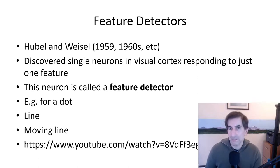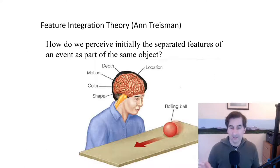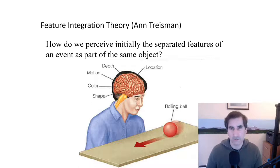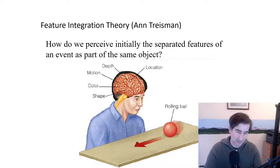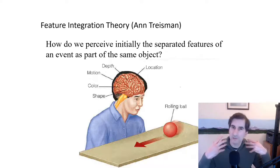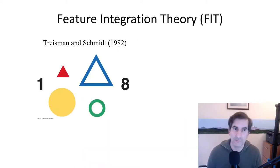Everything is broken down into features in what we see. The question is, how do we pull it all back together? Anne Treisman's Feature Integration Theory is fairly well supported. The question is how we perceive the initially separated features of an event as part of the same object. The answer is: attention pulls features together. If we pay attention to something, we pull the features together, and Anne Treisman did research to prove this.